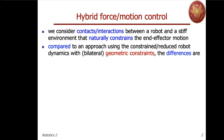We have already seen that there is a possibility of considering such bilateral geometric constraints within the dynamics and obtaining a constrained dynamic model or a reduced dynamic model, where we eliminate the extra degrees of freedom and remain only with the independent degrees that allow motion. What is new in this context? There are some differences when we are dealing with hybrid force motion control.